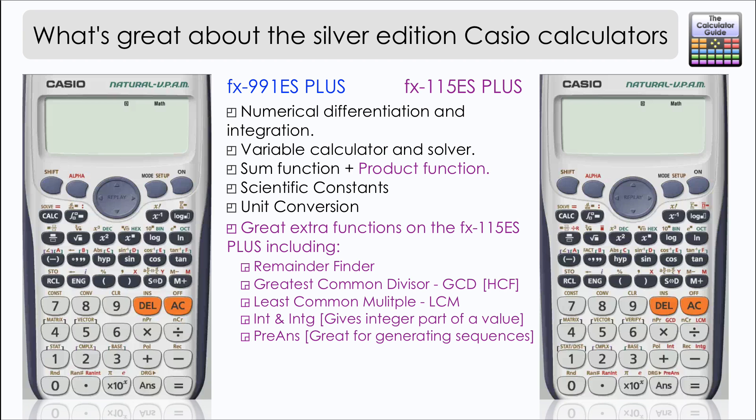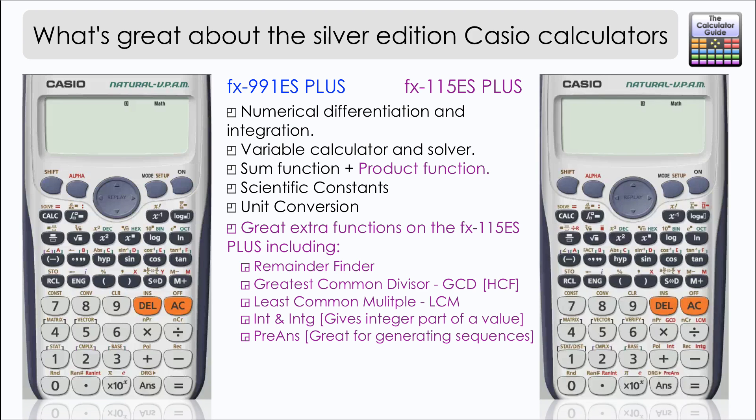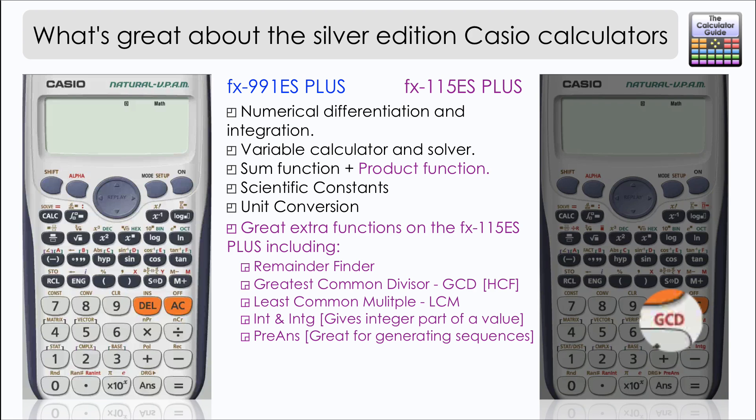The 115ES also has some great extra features. There is a remainder finder, so if you're dividing it will give you your integer component and your remainder. There is GCD, greatest common divisor, sometimes also known as highest common factor, as well as LCM, least or lowest common multiple.